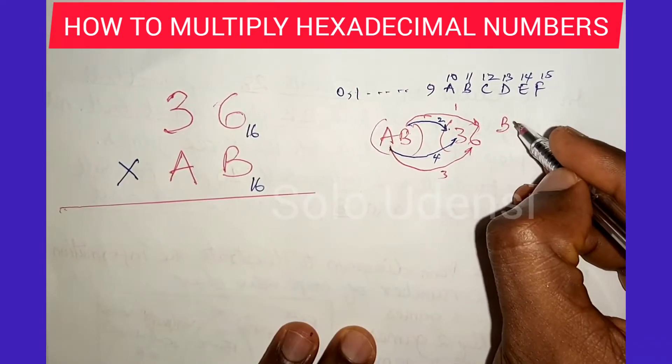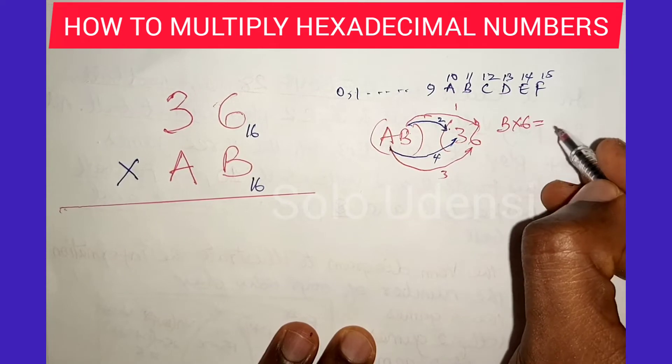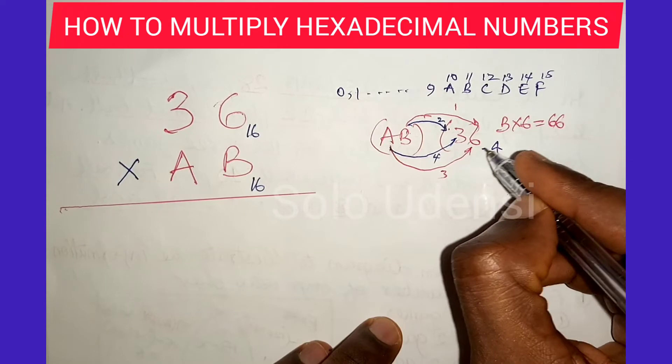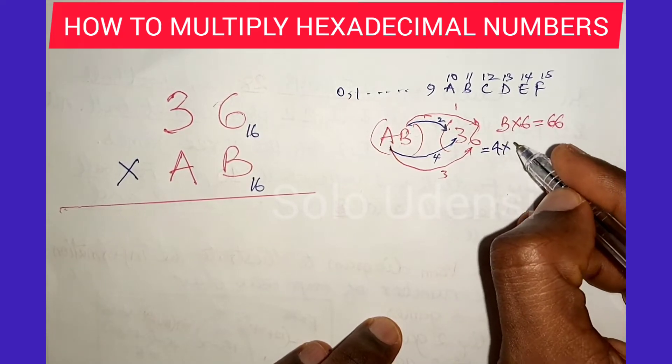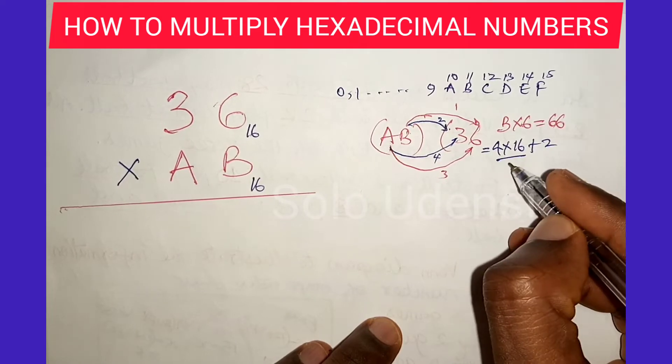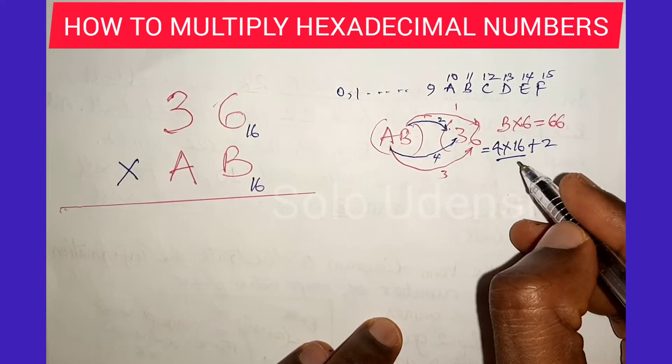B times 6 is equal to 11 times 6, which is 66. This equals 4 times 16 plus 2. 4 times 16 is 64 plus 2, that is 66.